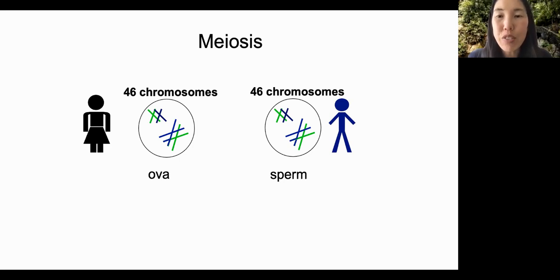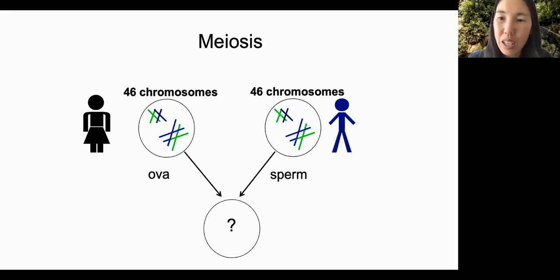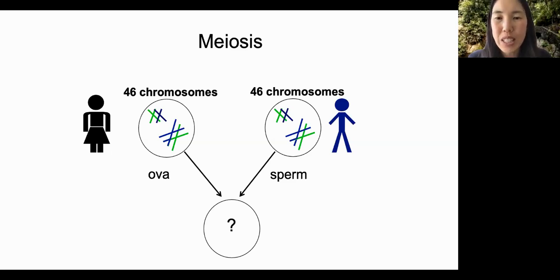Each one of our standard cells has 23 pairs of chromosomes, or 46 chromosomes in total. So if an egg has 46 chromosomes, and a sperm has 46 chromosomes, and they combine, how many chromosomes would the first cell of the new baby, the zygote, have?